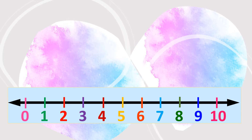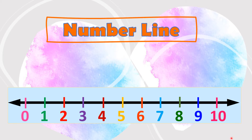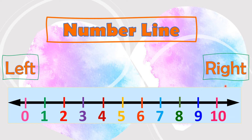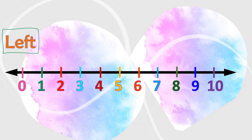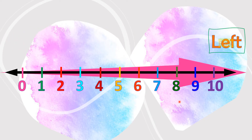When we compare numbers, we may use a number line. This is the left side of the number line and this is the right side. On this horizontal number line, numbers are written from 0 to 10.